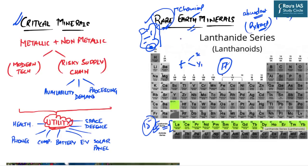Critical minerals, on the other hand, have nothing to do with chemical composition. They can be metallic as well as non-metallic. There are only two criteria to classify a mineral as critical: first, these minerals are highly relevant in modern-day technologies — for example, manufacturing of mobile phones, defense equipment, spacecraft, etc. — so they are critically important in the field of modern technology.